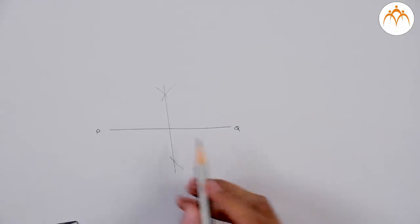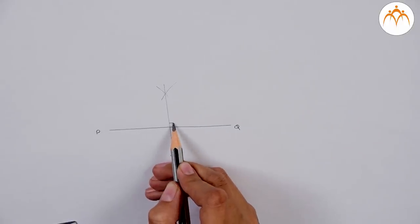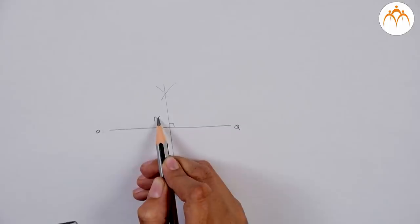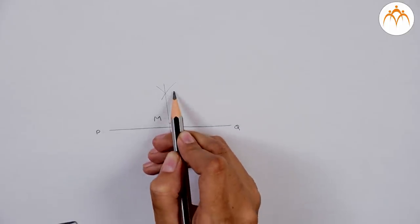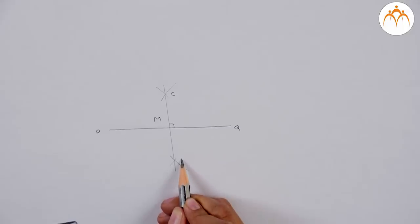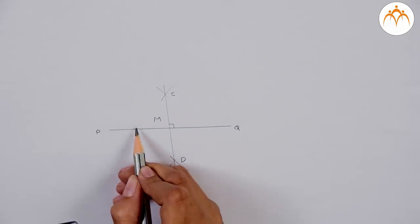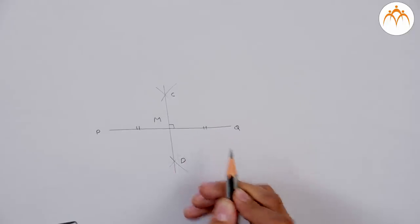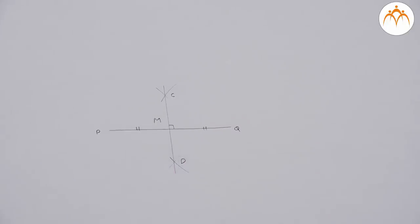To cross-check whether segment CD is actually a perpendicular bisector, measure angle CMP — angle CMP is equal to 90 degrees. Measure the lengths of segment PM and segment QM. You will notice that PM is equal to QM.